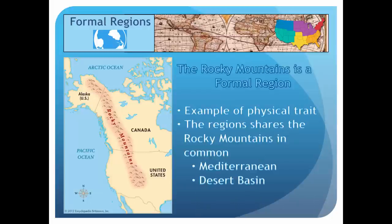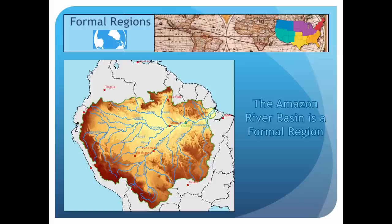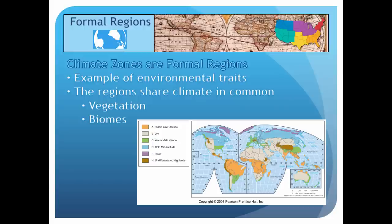Let's look at some examples. Formal regions are regions you can prove exist. The Rocky Mountains are a formal region — all of the people living in this region share the mountains in common. The Amazon River Basin is also a formal region; we can prove that each river in the basin traces back to the Amazon. Climate zones are formal regions because they share similar temperature and precipitation levels, provable by data. Other examples include vegetation patterns and biomes like grasslands or tundra.